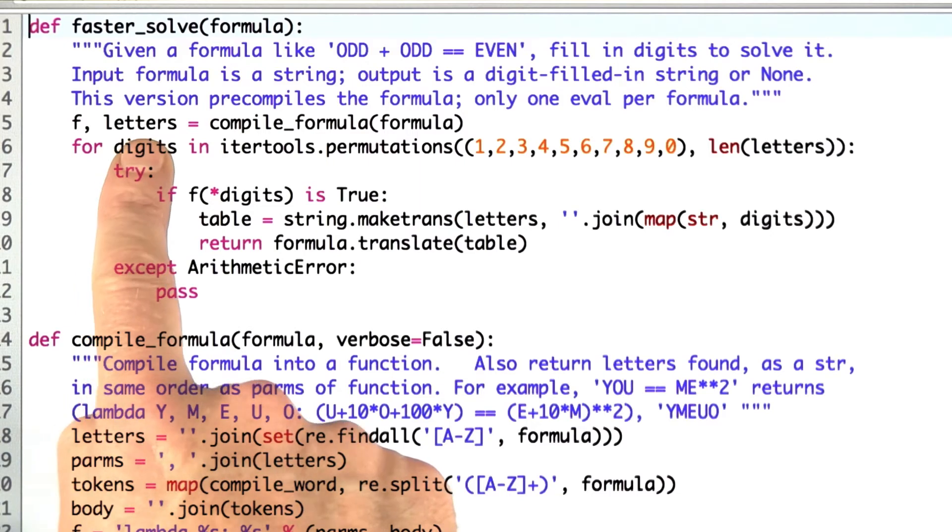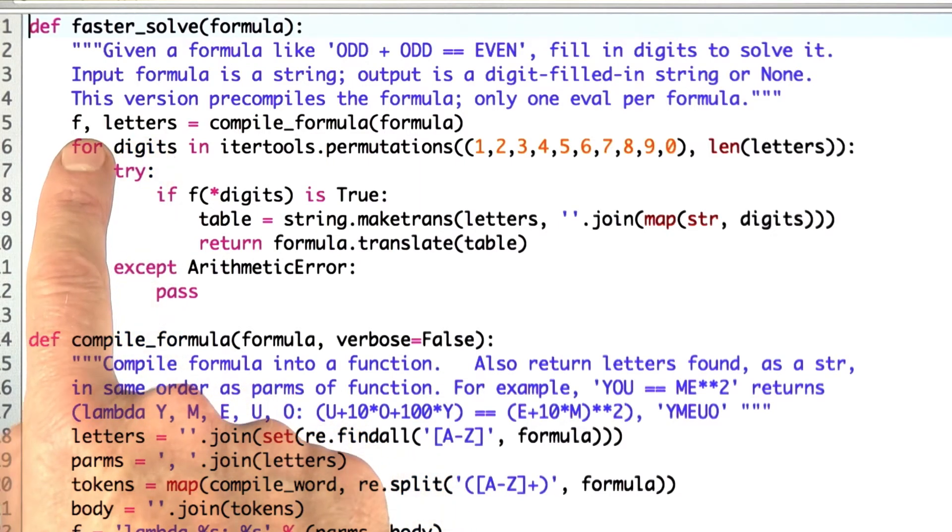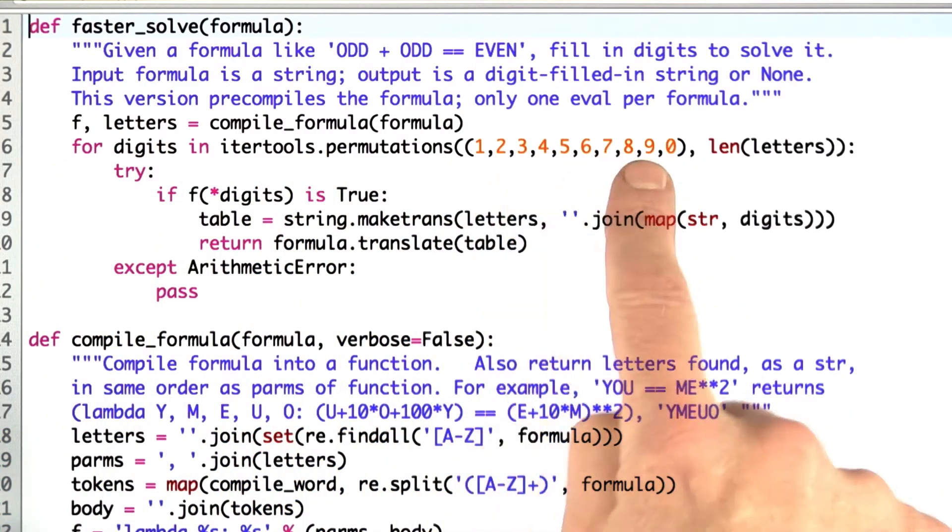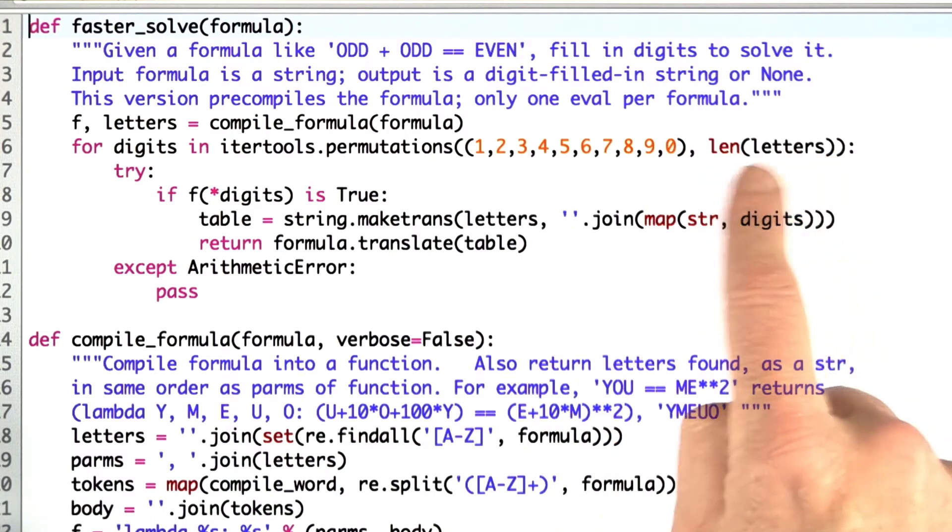While I'm there, I'm also returning the letters that are within the formula. That evaluation or compilation of the formula is done once. Then I go through all the permutations of the digits taken length of letters at a time.